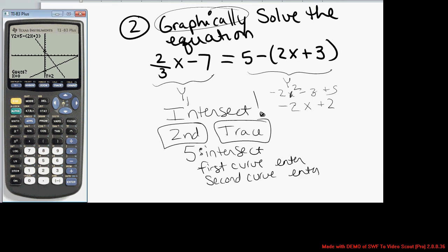It says, can you give me a guess as to where the intersection occurs? You can move your cursor near that point and press enter one more time. And you'll know you have it when the bottom of the screen says intersection. And it tells me the point is 3.375, negative 4.75.